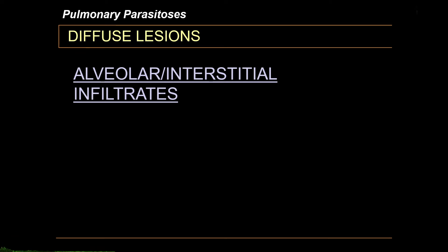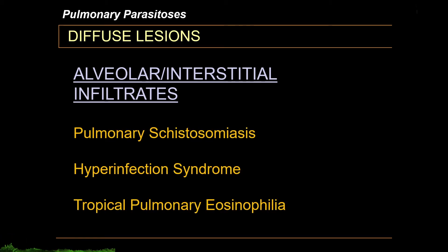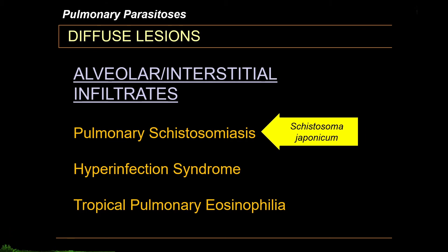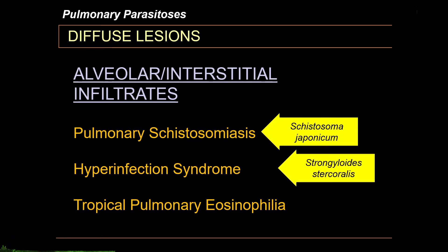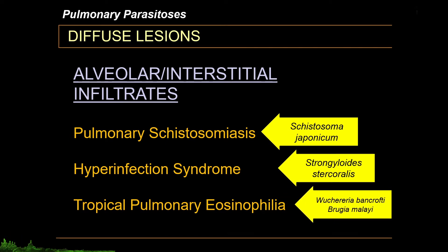Diffuse alveolar or diffuse interstitial infiltrates are exemplified by these other parasitic infections: pulmonary schistosomiasis, hyperinfection syndrome, and tropical pulmonary eosinophilia. Schistosomiasis is caused by Schistosoma japonicum and other Schistosoma species. Hyperinfection syndrome is a more severe disease caused by Strongyloides stercoralis, while tropical pulmonary eosinophilia (TPE) is caused by filarial worms.